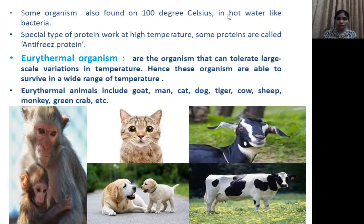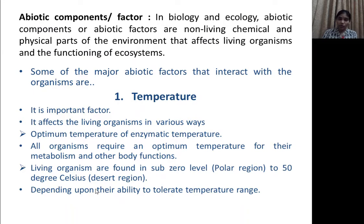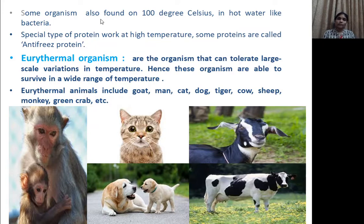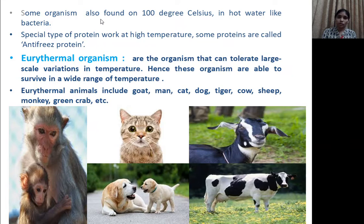There are bacteria — living organisms — that survive in very hot water, near 100 degrees Celsius. It depends on how much temperature an animal can tolerate. The more temperature it can tolerate, the more it can survive there. Some animals survive at high or low temperatures because they have special types of proteins in their bodies. One such protein is called anti-freeze protein, which helps survive in critical temperature conditions.